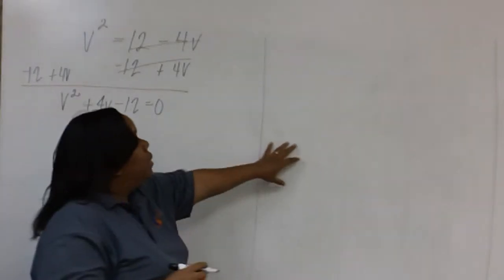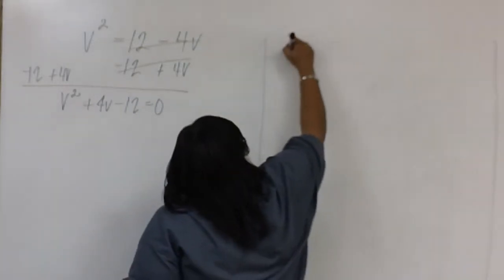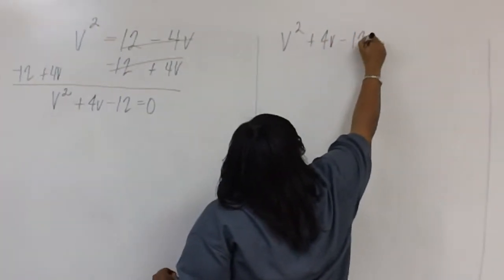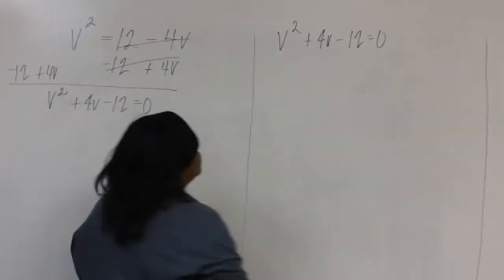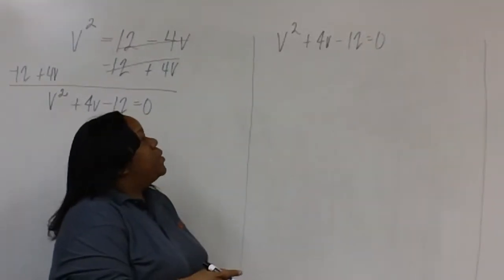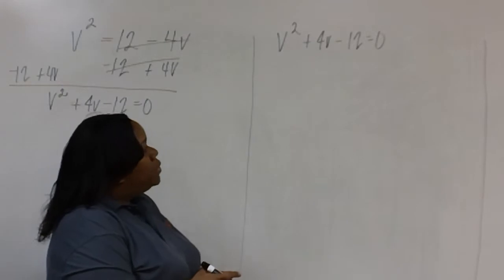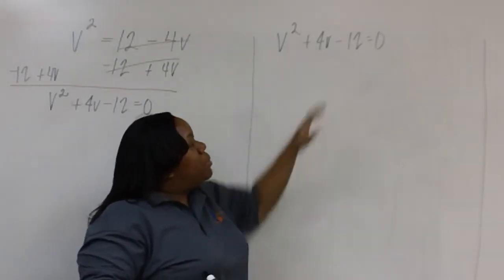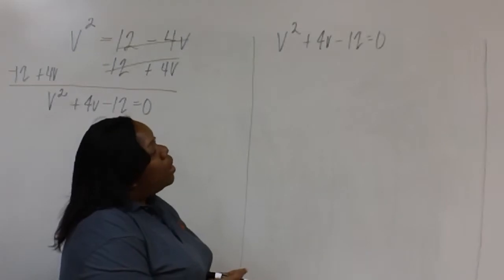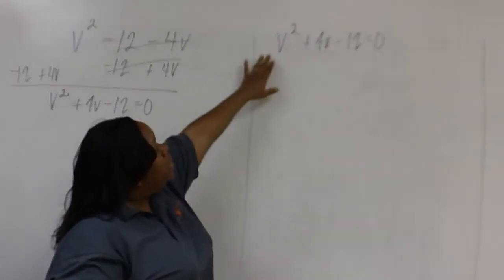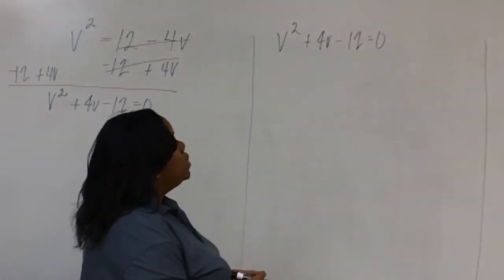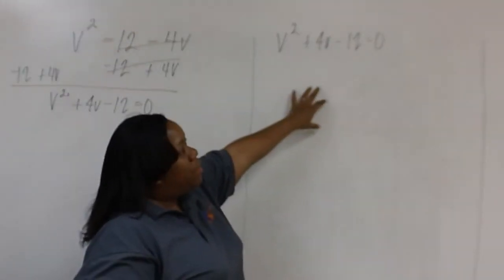I'll write it here. Remember that the first step in factoring is to check for GCF. Notice that V is not common to both terms. Also notice that there's not a GCF between 1, 4, and 12. So there is no GCF for this problem.